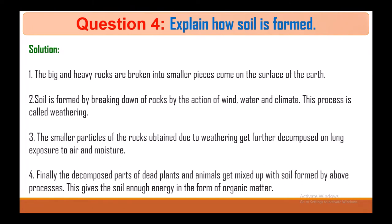Question 4: Explain how soil is formed. Big and heavy rocks are broken into small pieces on the surface of the earth. Soil is formed by the breaking down of rocks by the action of wind, water, and climate — this process is called weathering. The smaller particles obtained due to weathering get further decomposed on long exposure to air and moisture. Finally, decomposed parts of dead plants and animals get mixed with the soil, giving it organic matter.